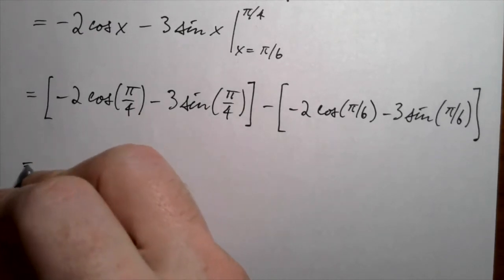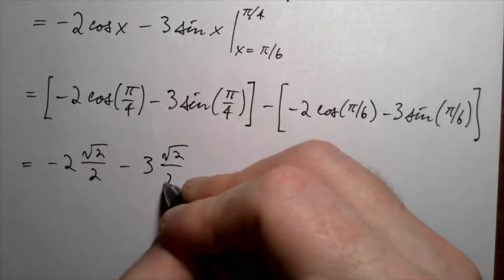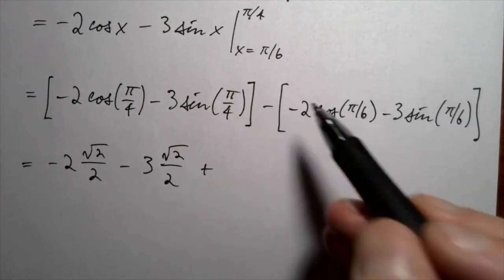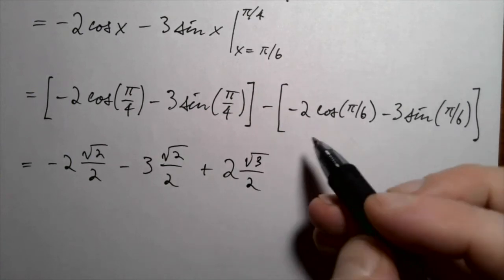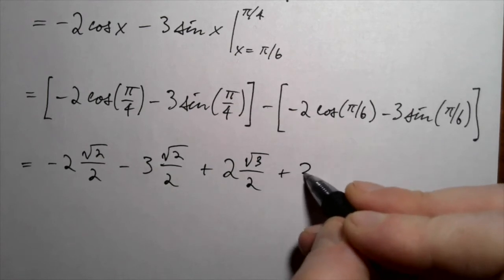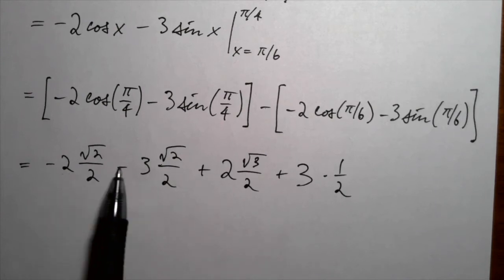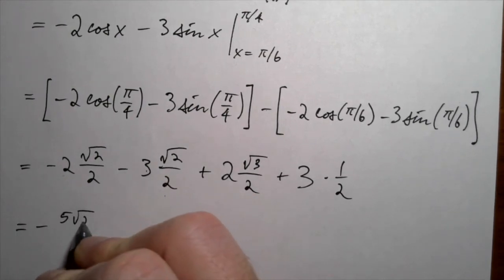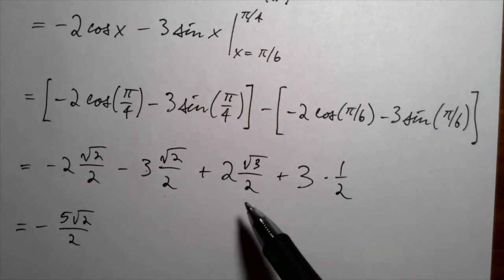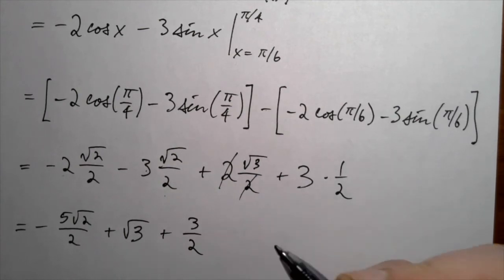Now it's just a matter of evaluating. Cosine of pi over 4 is root 2 over 2, and sine of pi over 4 is also root 2 over 2. Cosine of pi over 6 is root 3 over 2, and sine of pi over 6 is 1 half. With the minus-minus giving a positive, we end up with minus 5 copies of root 2 over 2, which is minus 5 root 2 over 2, plus root 3, minus 3 over 2. That is the area under the curve in this case.